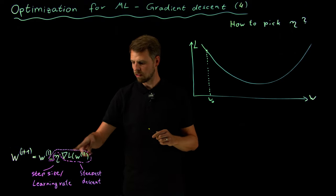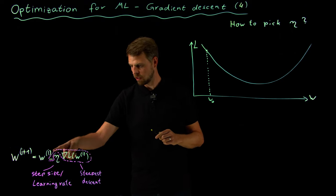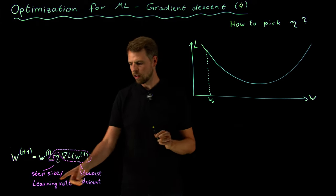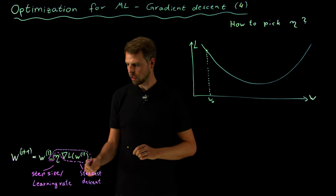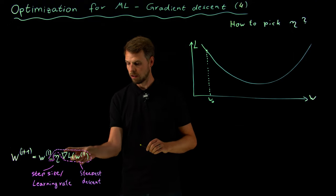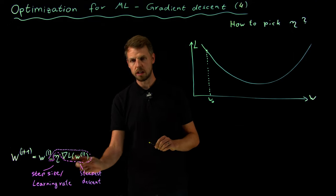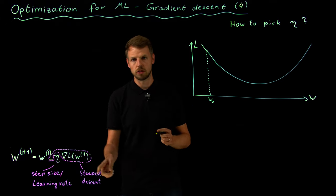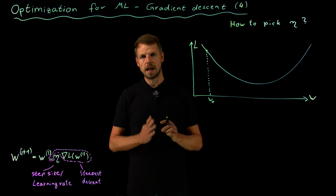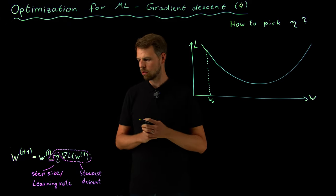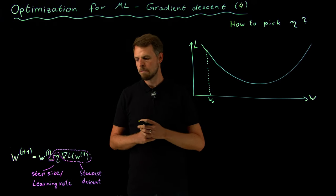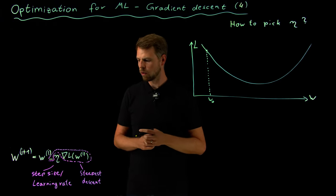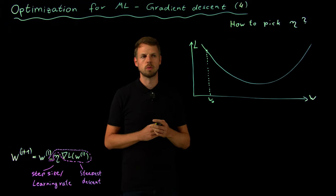It looks a little bit messy because I tried to separate here the step size, which is eta, also known as the learning rate in machine learning, from minus the gradient — because this is what we identified in our previous video as the steepest descent direction and we're going opposite the uphill direction. The gradient always points uphill, so the negative gradient points downhill — it's the steepest direction we can take.